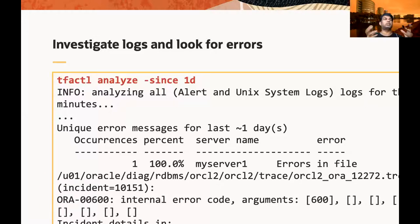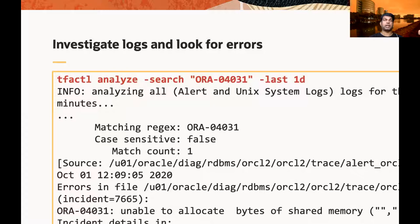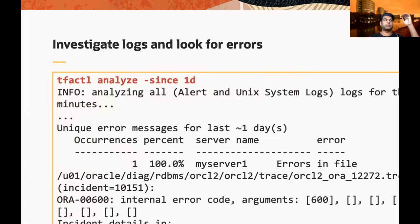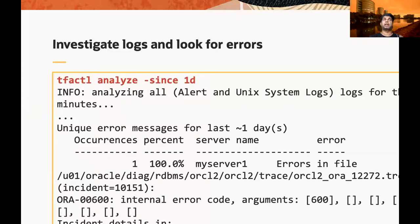There may be around 20 unique kinds of log messages. The analyze command gives you a histogram of the entire log without going through it — showing how many times a particular log line has occurred, from which server, and what percentage of the total log it represents. Occurrences and percentage correlate. This is how you analyze everything for the last one day across all alert logs, all Oracle homes, and system logs.